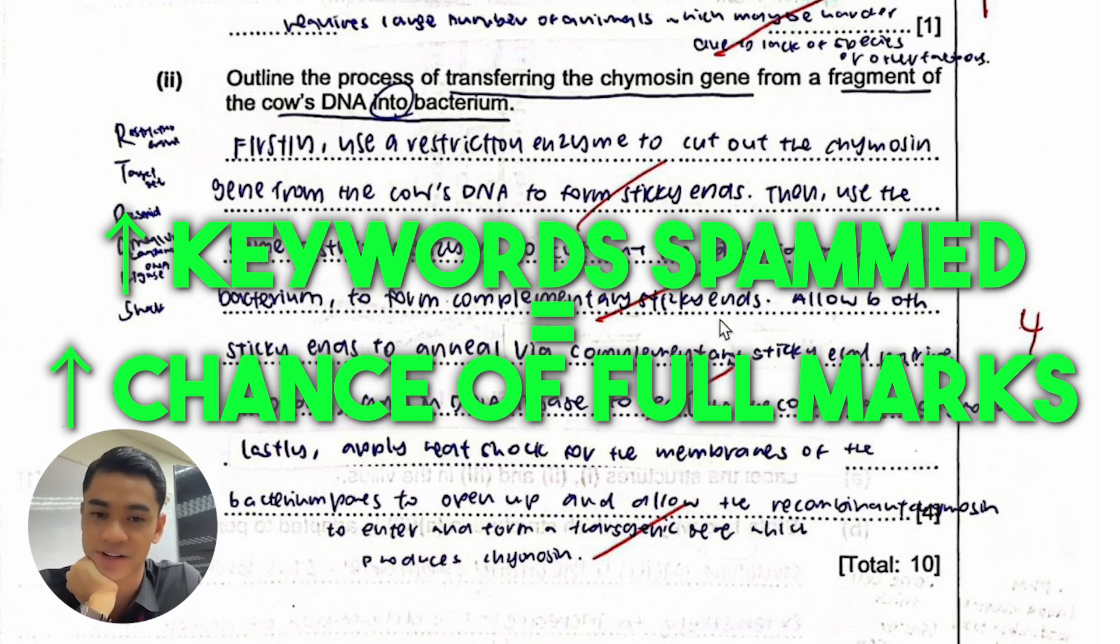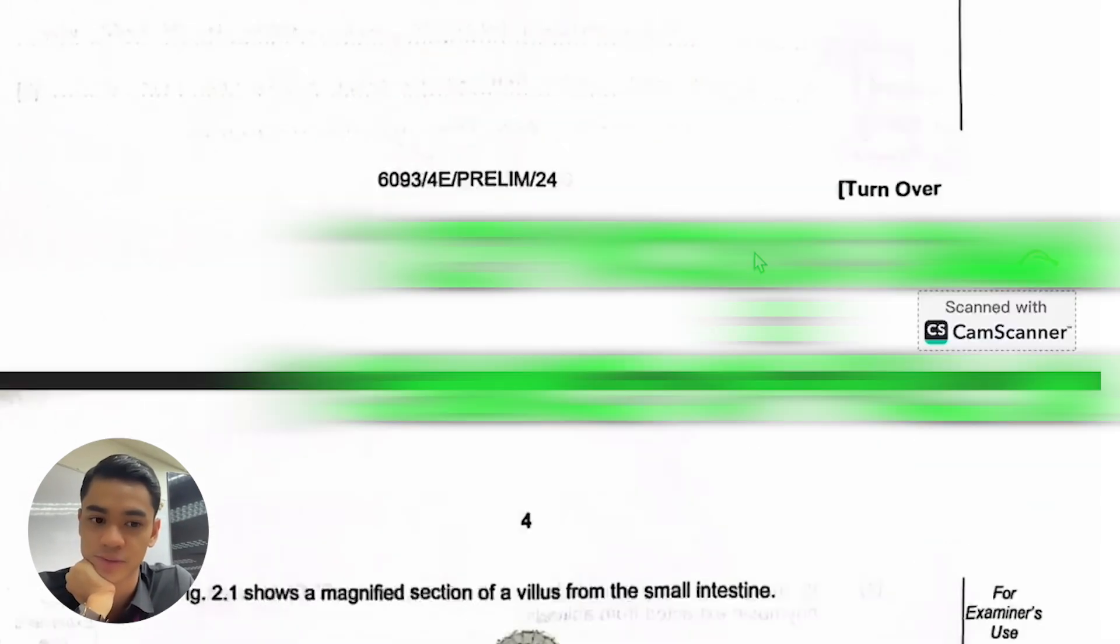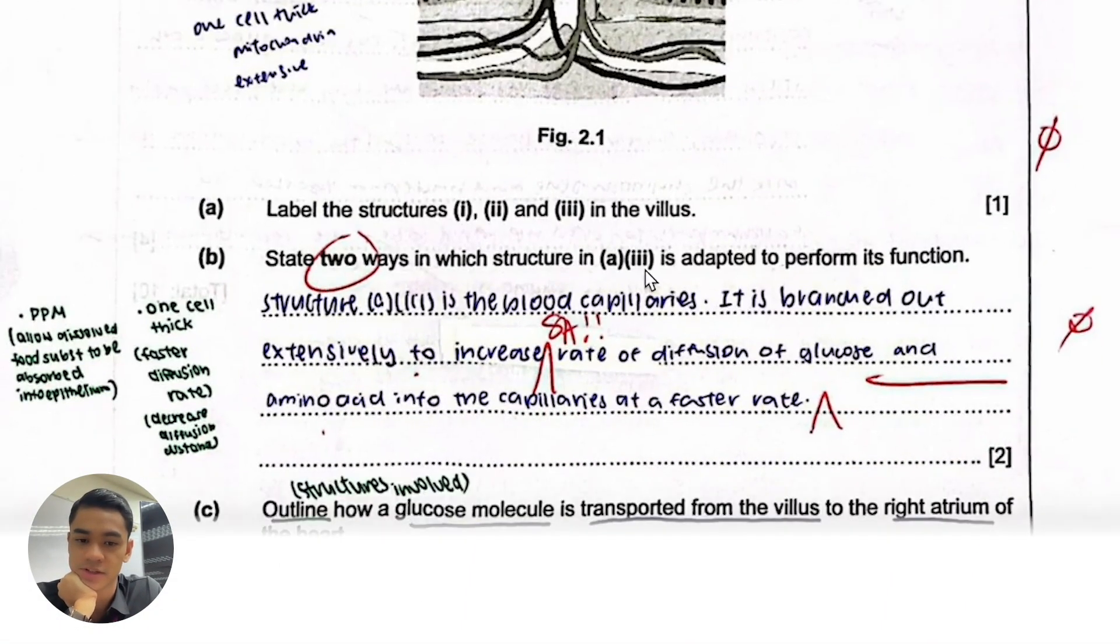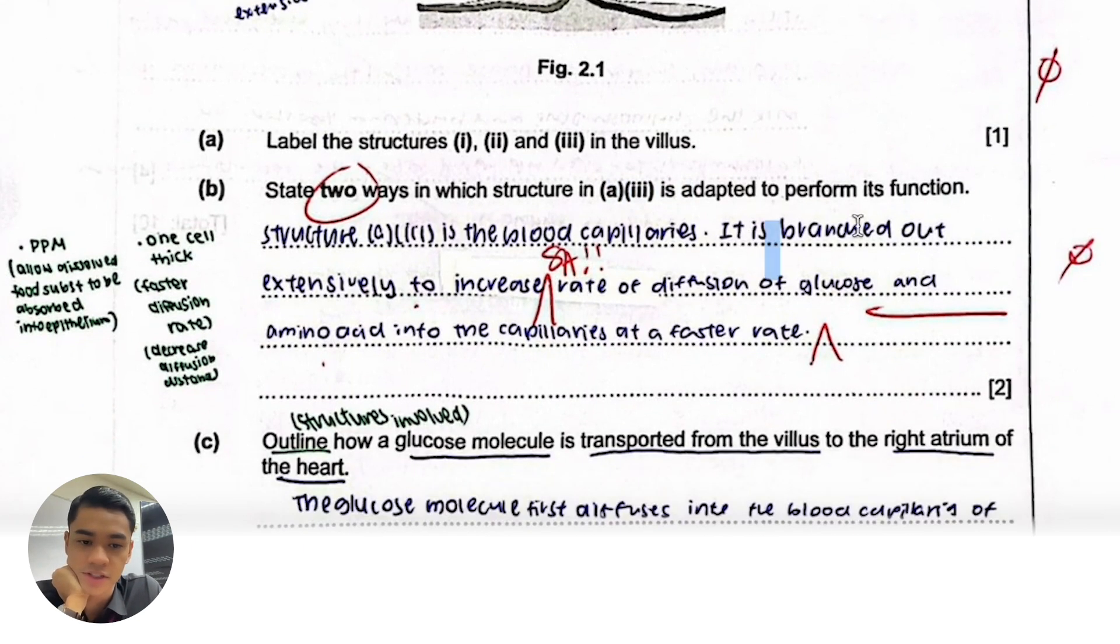Let's look at this: two ways in which part three, which is blood capillaries, are adapted to perform their function. You said it's highly branched to increase your diffusion. This is the structure evidence, this is the result already, but where is the explanation? The explanation was missing there, that it increases the surface area in contact.